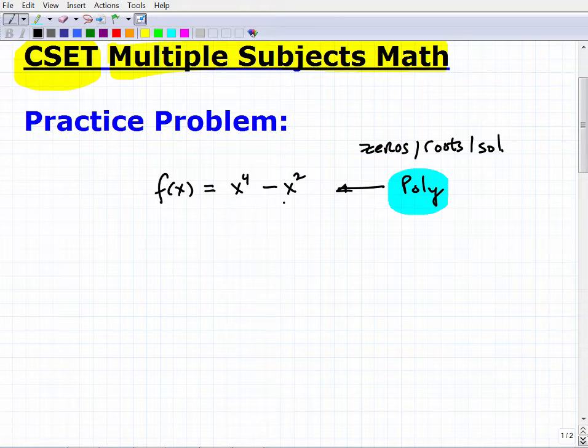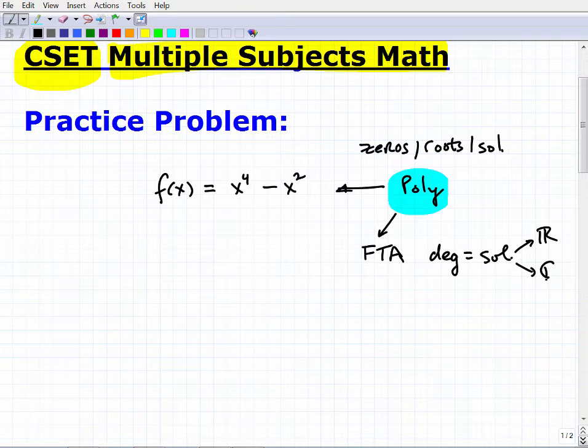Now this is a polynomial, what are some of the things that we know about polynomials? One of the main things we know that's super important is the fundamental theorem of algebra, which says that the degree of the polynomial is how many solutions the polynomial has. This is a fourth degree polynomial, so this is going to have four solutions. What type of solutions? It's going to have real number solutions and/or complex.